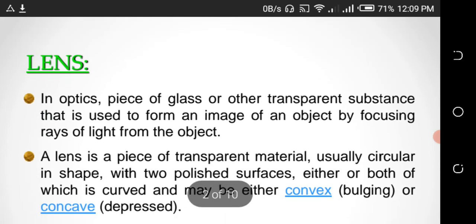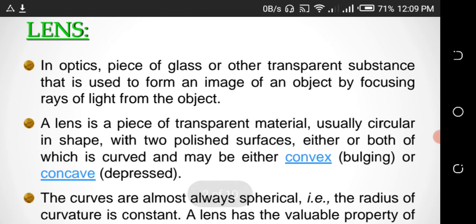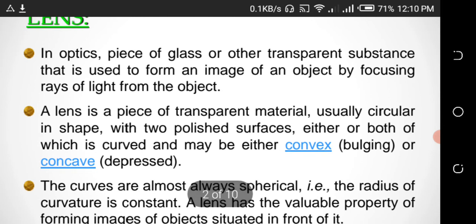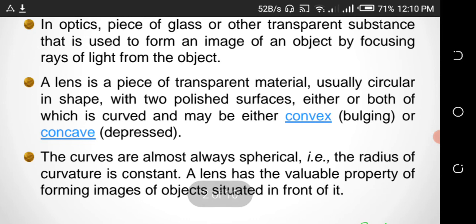Lenses. First object is lenses. In optics, a piece of glass or other transparent substance that is used to form an image of an object by focusing rays of light from the object. A lens is a piece of transparent material, usually circular in shape, with two polished surfaces, either or both of which is curved and may be either convex or concave.